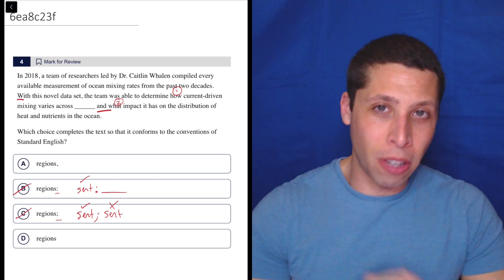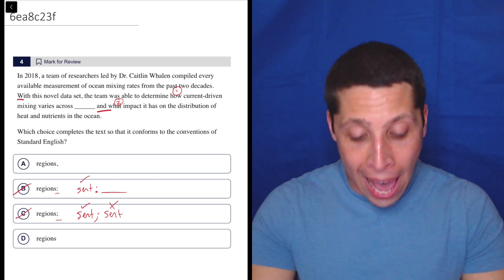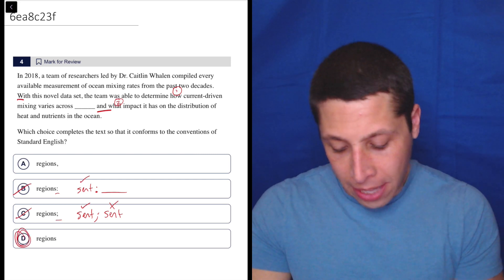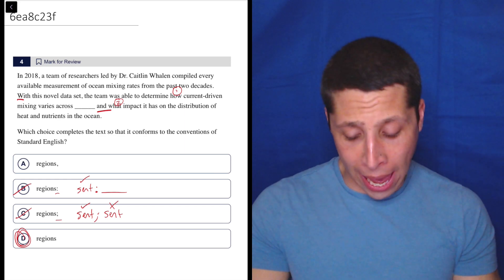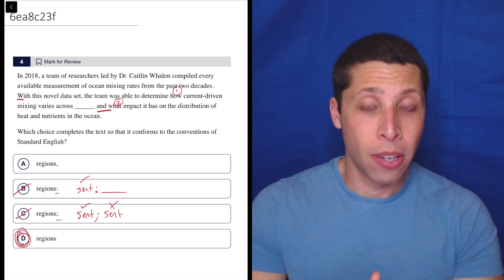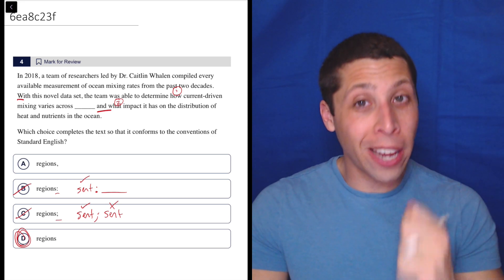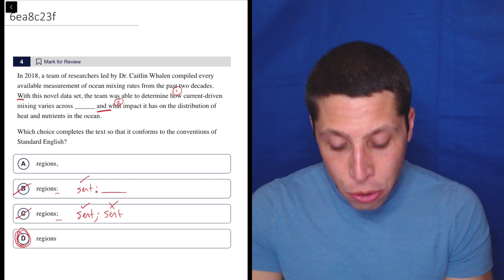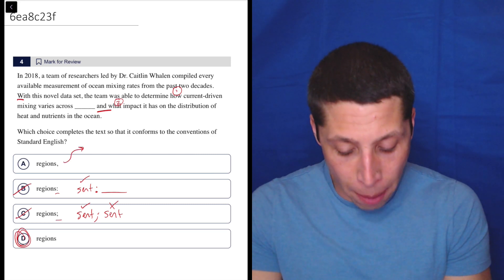Now this is where I think that the real trouble is going to be. I think many of you are going to pick A, though the actual answer here is D. And the reason you might pick A is that you associate the word and with commas. And we do often use the word and with commas. There are two main situations where that would happen.